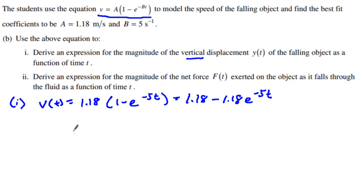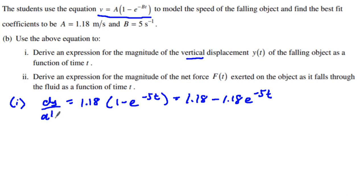What am I going to do in order to find the vertical displacement? Velocity is dy/dt — the rate of change of the vertical displacement. So I'm going to take the integral of this, which means it's like I have a differential equation. I multiply the dt out, and what do we have? We have this set up for an integral, going from time 0 to time t.